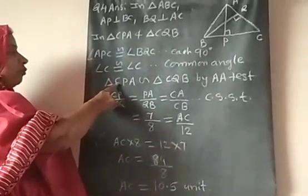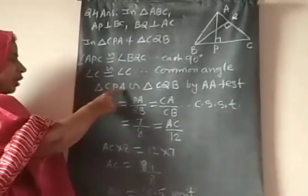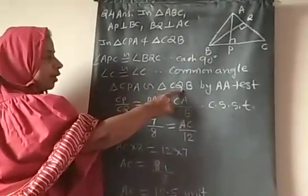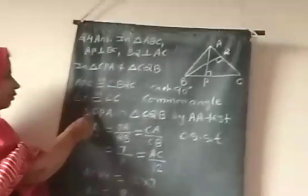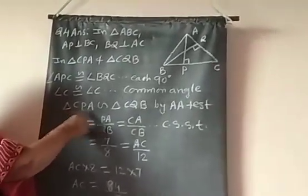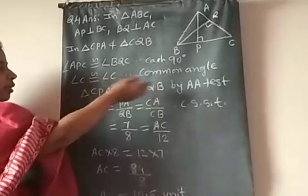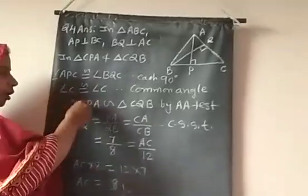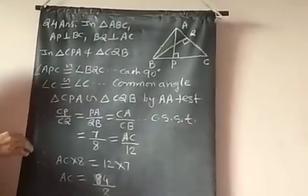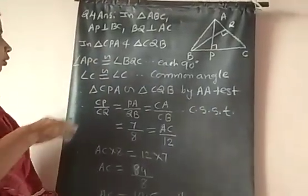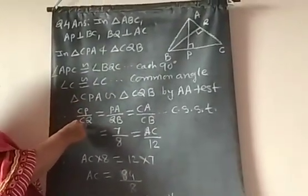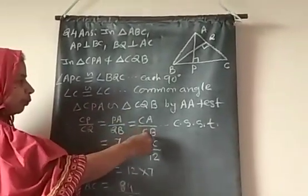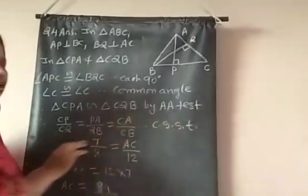Now we write the triangle names. First triangle is C-P-A, where angle P is 90 degrees, so P is in the second position; therefore Q is also in the second position for triangle C-Q-B. Angle C and angle C are common, so C is first in both. The third letters follow accordingly. So we write the similarity as: CP upon CQ is equal to PA upon QB equal to CA upon CB. Reason: C.S.S.T. PA is given as 7, QB is given as 8, CA is to be found, and CB is given as 12.